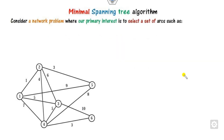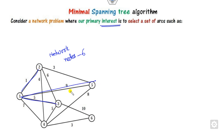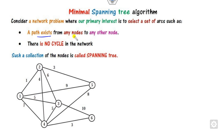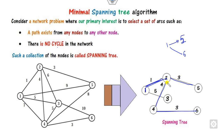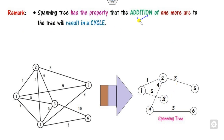Now, what are the minimal spanning tree algorithms? Given a network, you can see there are 6 nodes with arcs 1-2, 1-4, 1-3, and so on. Your target is to select arcs such that a path exists from any node to any other node. Starting from node 1, you can reach node 2 directly, reach node 5 via 1-2-5, reach node 6 via 1-2-4-6, and there is no cycle. An important property: if you add one more arc to the spanning tree, it always forms a cycle.